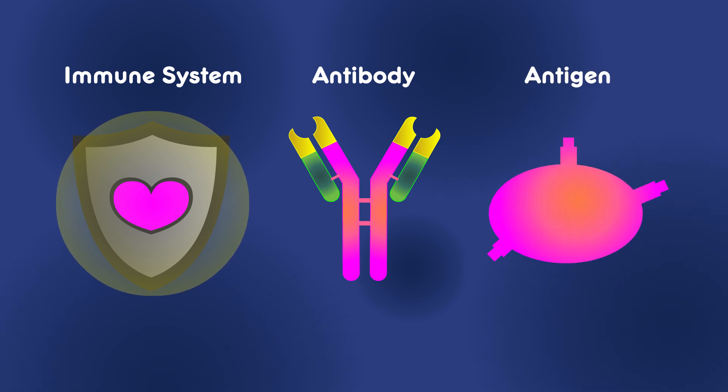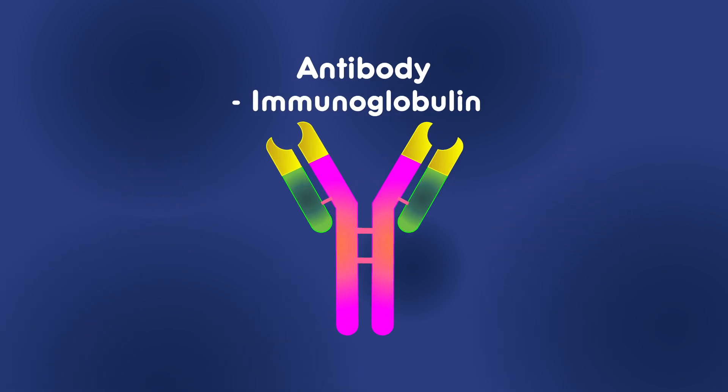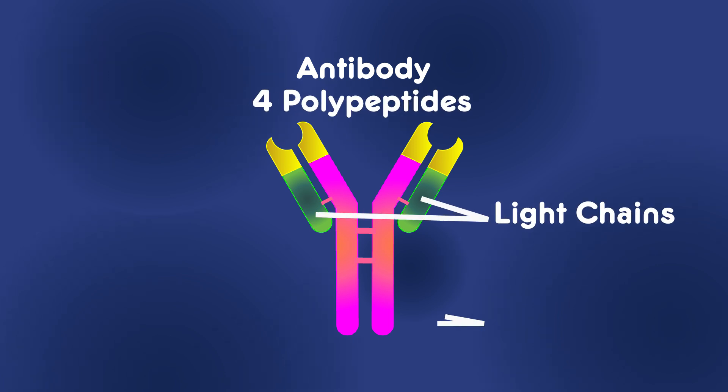So what do antibodies look like? Antibodies are also known as immunoglobulin. They are generally a Y-shaped protein consisting of four polypeptides: two identical light chains and two identical heavy chains.